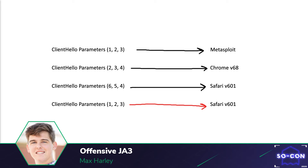The same applies for the next two using different user agents with different client libraries — 2, 3, and 4 match to Chrome version 68, and 6, 5, and 4 match to Safari version 601. In the last example, we see a client attempting to hit our network using the same client hello parameters as Metasploit, but advertising as the Safari version 601 user agent. We can be suspicious of this traffic since we know the Safari 601 user agent is different and the client hello parameters match Metasploit.